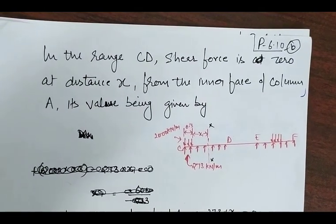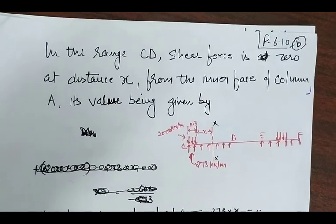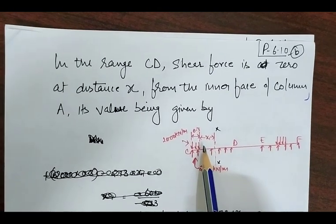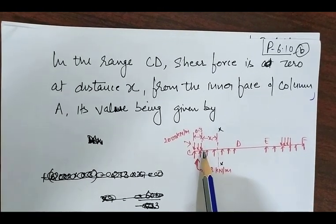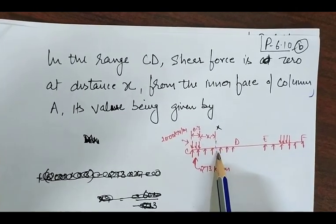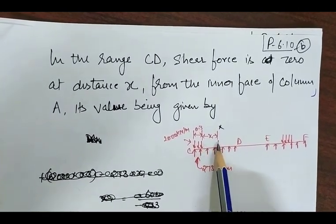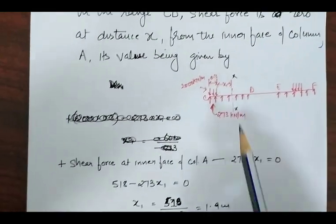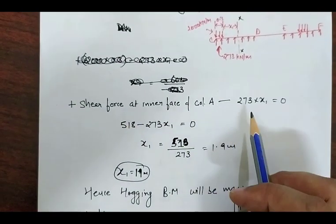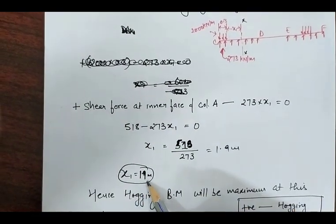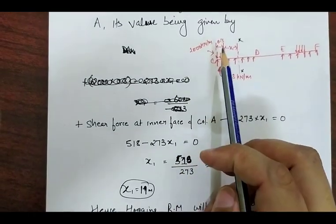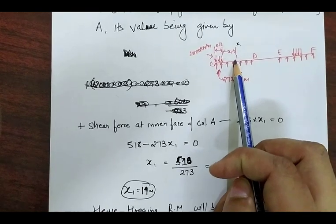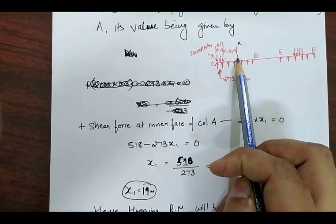To find the position where the shear force is zero, we consider a distance x1 from the inner face of column A. We calculate the shear force at any distance x and find the value of x where it equals zero. According to this equation, x1 is equal to 1.9 meters from the inner face of column A.